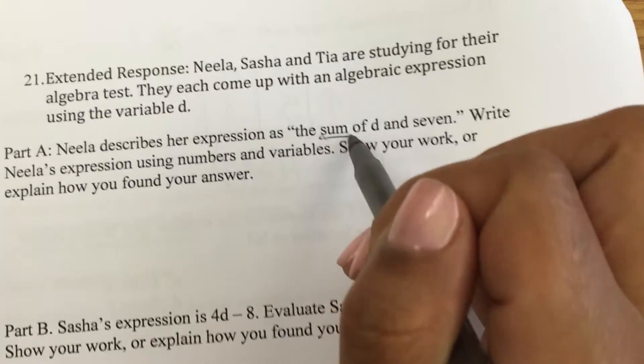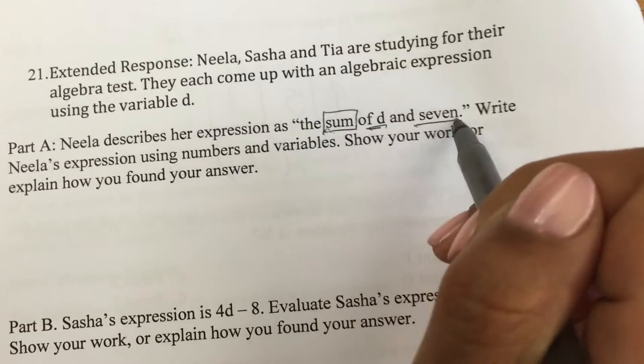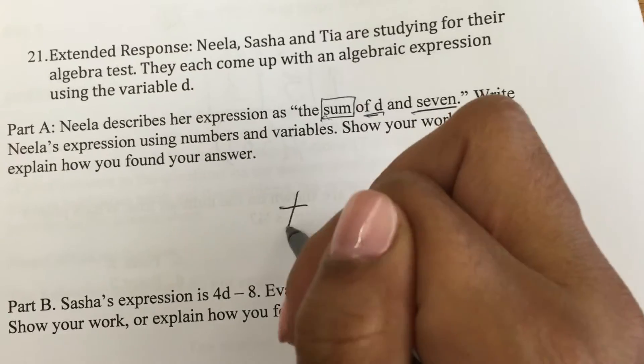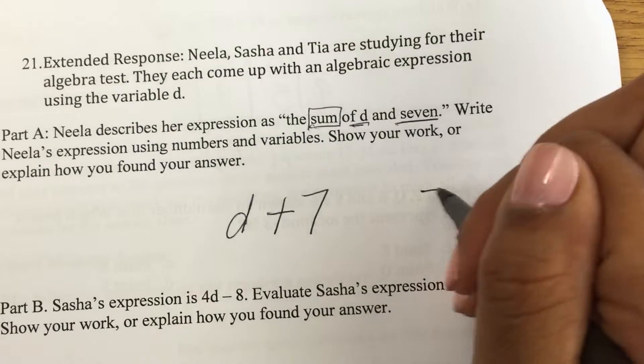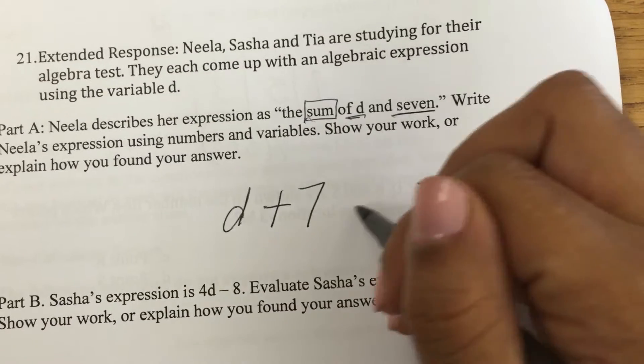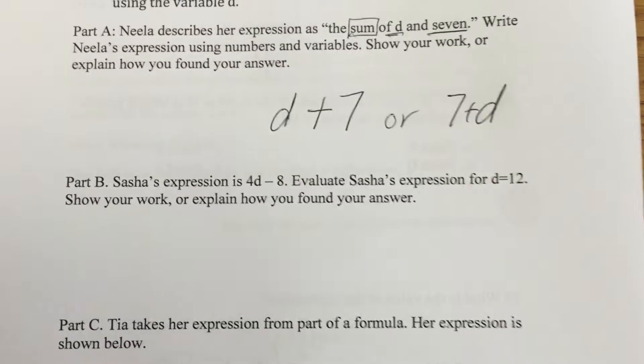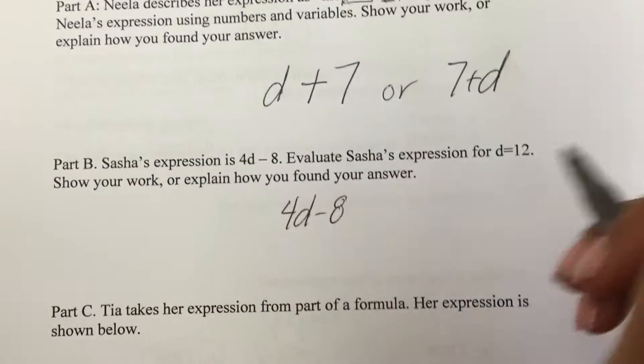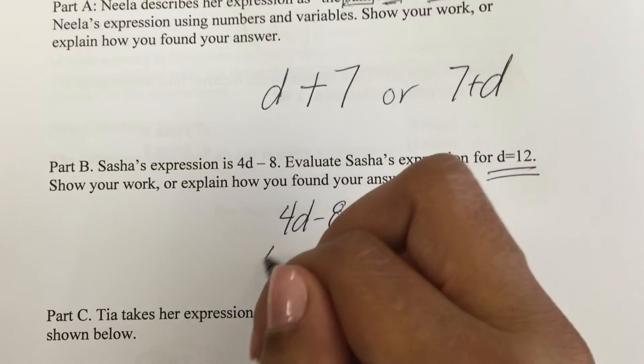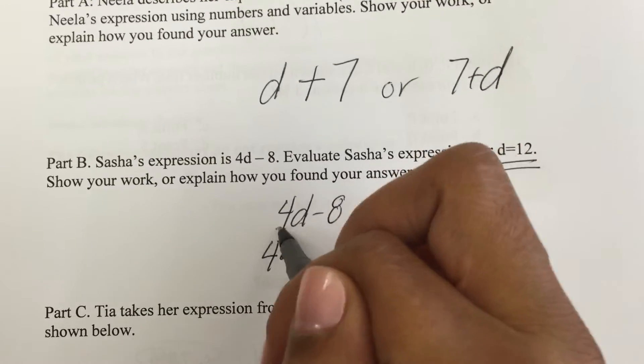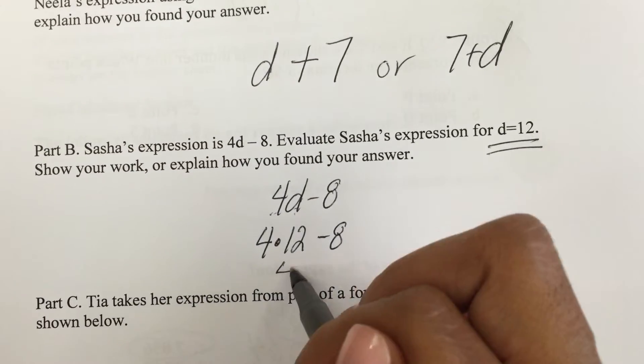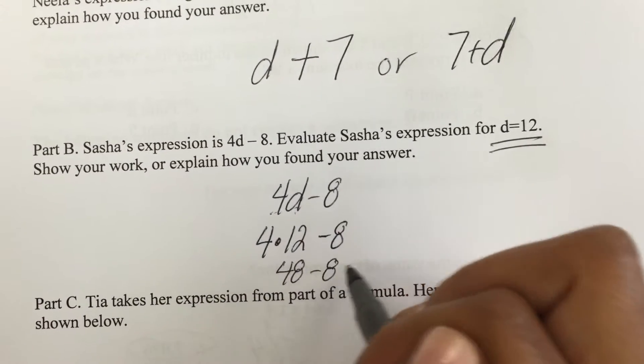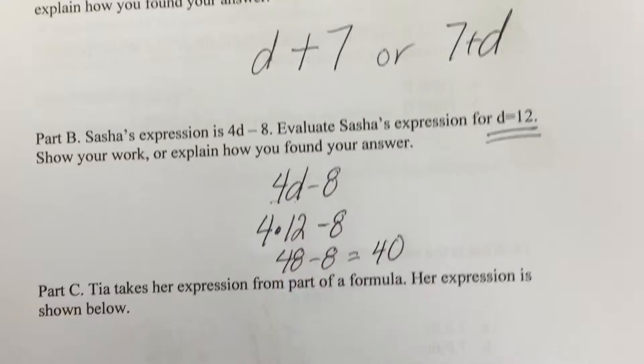Here is my extended response. In the first one, I wanted to know the sum of d and 7. So sum means to add d and 7. Since this is commutative, if you had 7 plus d, I would have given it to you. Okay. So now I have 4d minus 8 when d equals 12. So we talked about this. This is 4 times the number. So this is 4 times 12 minus 8. Let's use our order of operations. That's 48 minus 8 is 40.